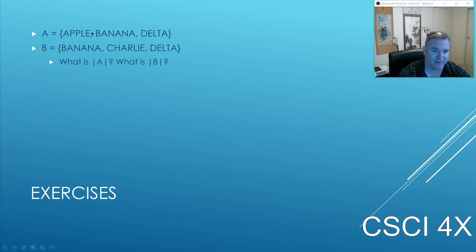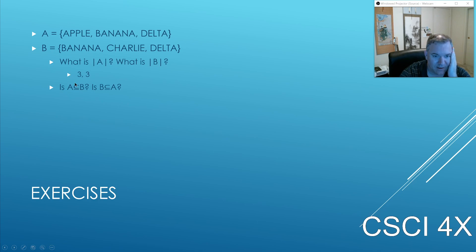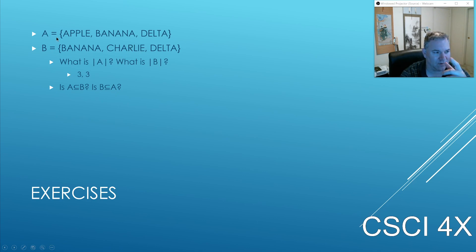Let's do some exercises. A is {apple, banana, delta}. B is {banana, charlie, delta}. Size of A is three; size of B is three. Is A a subset of B? A is not a subset of B because A has elements not in B — it's got apple. And B is not a subset of A because it's got charlie, and charlie is not a member of A. So this is no to both of them.